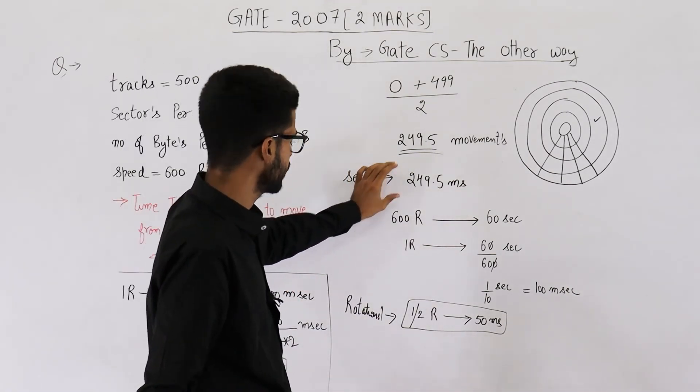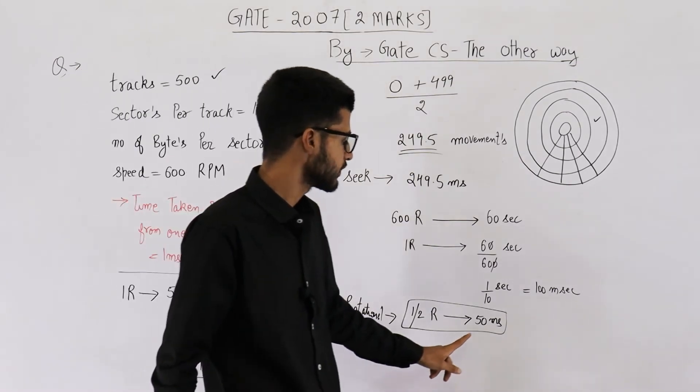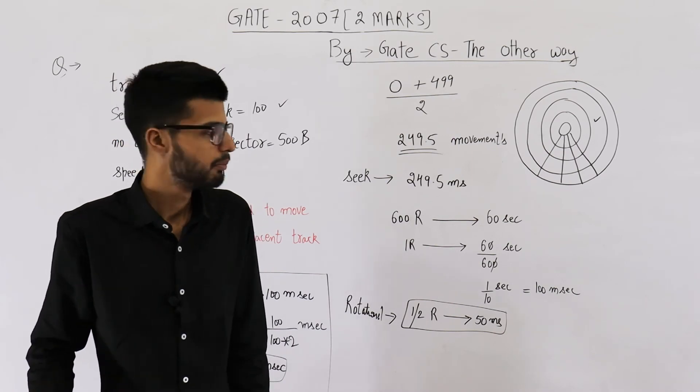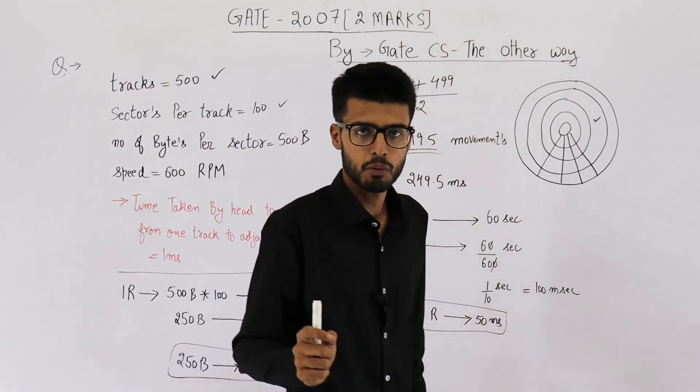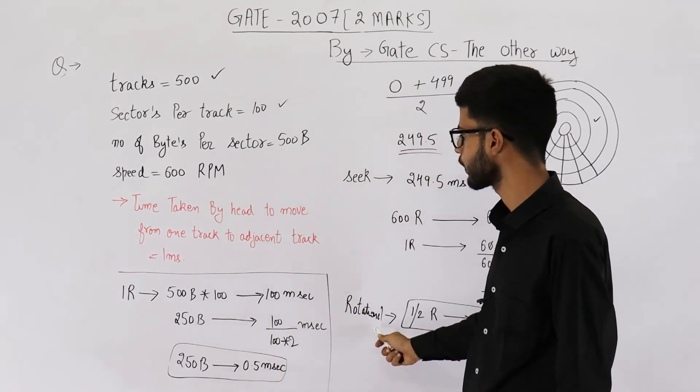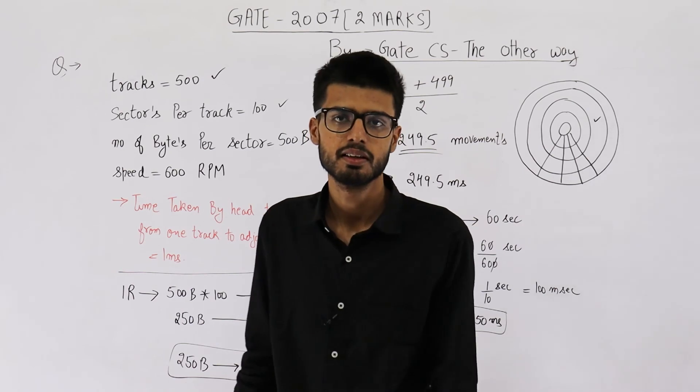So 249.5 plus 0.5 will be 250. 250 plus 50 is 300. So total time will be 300 milliseconds. I am repeating the formula. Total time is equal to seek time plus rotational time plus transfer time. So your answer is 300 milliseconds.